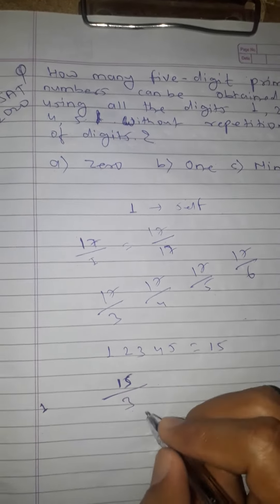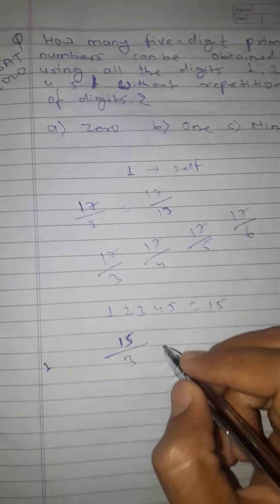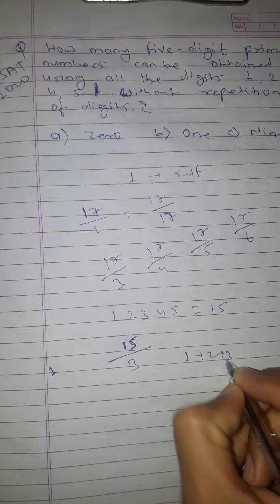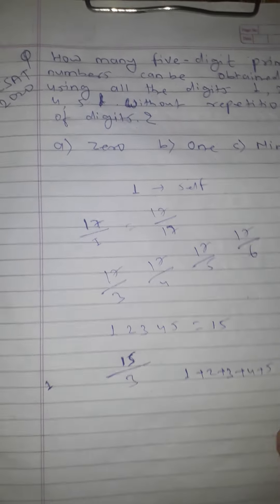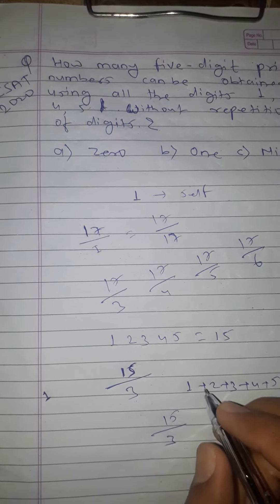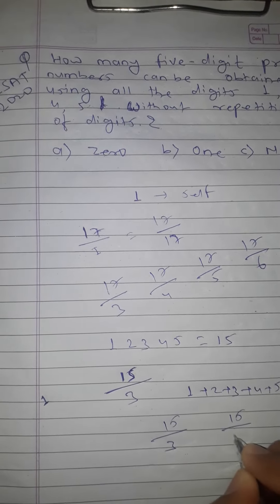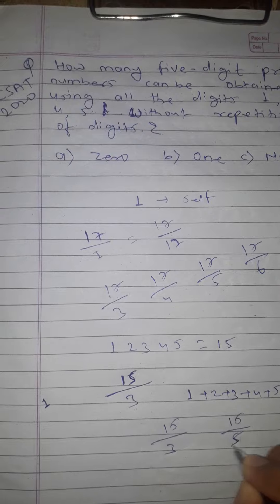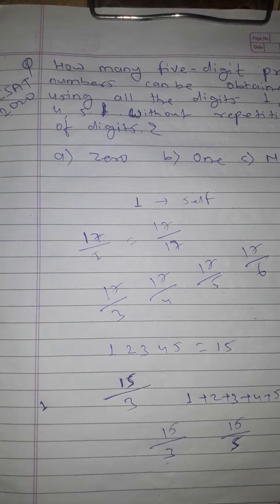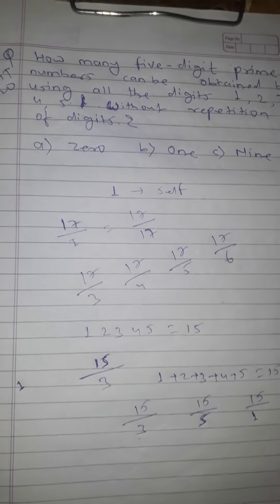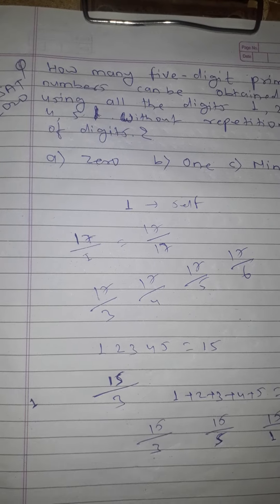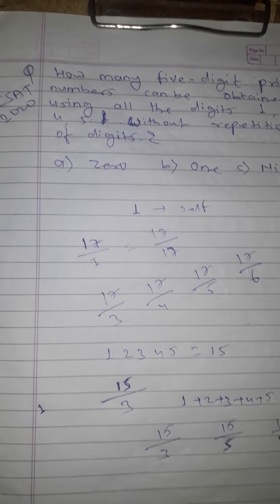1 plus 2 plus 3 plus 4 plus 5 equals 15, and 15 is not a prime number. 15 is divisible by 5, 3, and 1, so it's not a prime number. This means the remaining value is 0.